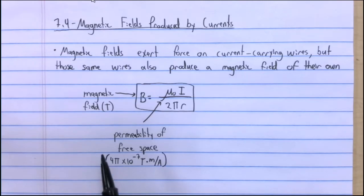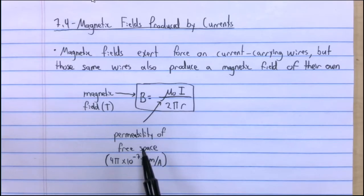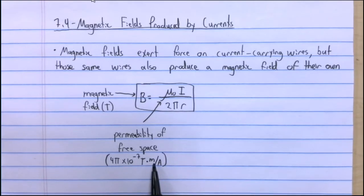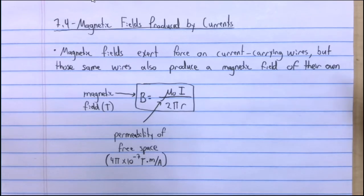Each substance in the world has a different permeability value. For example, water would have its own value and we can figure out the magnetic field within a neon gas — but mu naught is just the value for empty space, a vacuum. It's 4 pi times 10 to the negative 7th.